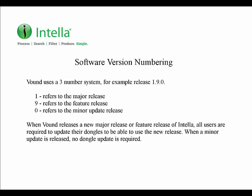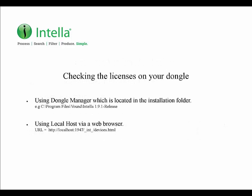For example, if my dongle is licensed for version 1.9, I'll be able to run all versions that start with 1.9, such as version 1.9.1. Before you try to update your dongle, you need to make sure that the dongle is not already up to date. There are two ways to check which licenses and versions are on your dongle: one is using the IntelliDongleManager, and two is by using a web browser and accessing the dongle via a web page.